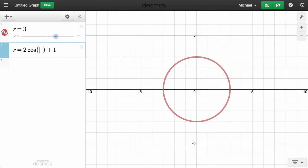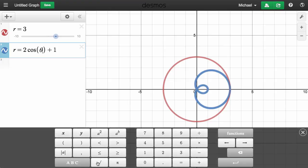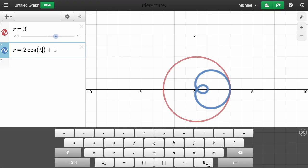To get theta, simply type t-h-e-t-a. Or you can find theta in the ABC menu on the Desmos keypad, here at the bottom right.